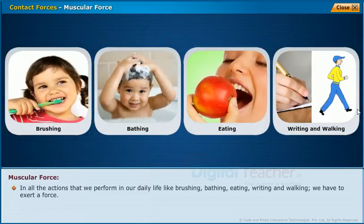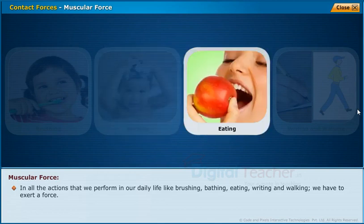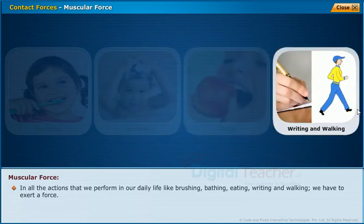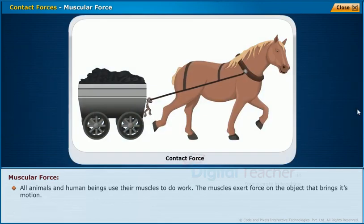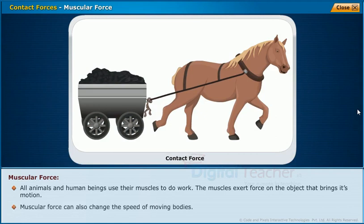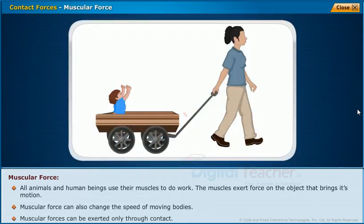In all the actions that we perform in our daily life — like brushing, breathing, eating, writing, and walking — we have to exert a force. The force which we exert by using our body muscles is known as muscular force. All animals and human beings use their muscles to do work. The muscles exert force on the object that brings its motion. Muscular force can also change the speed of moving bodies. Muscular forces can be exerted only through contact.